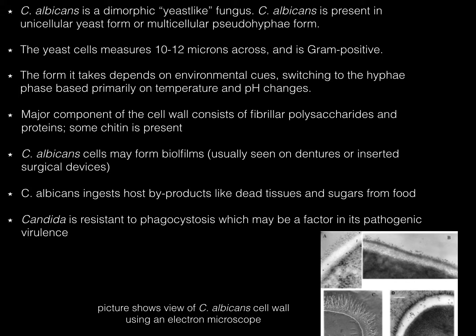Candida albicans ingests host byproducts like dead tissues and sugars from food. Candida is especially resistant to phagocytosis, which may be a factor in its pathogenic virulence.